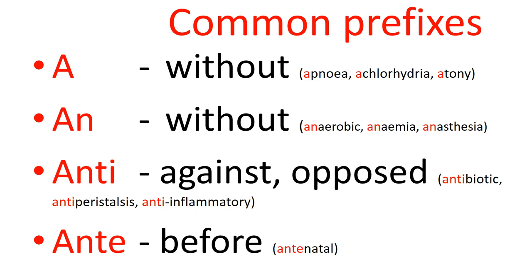'An', a-n, in front of a word as a prefix also means 'without'. So 'a' or 'an' in front of a word actually mean the same thing. For example, anaerobic metabolism is metabolism that takes place in the absence of oxygen, giving rise to the production of lactic acid. Anaerobic organisms are organisms which thrive in an oxygen-depleted atmosphere.